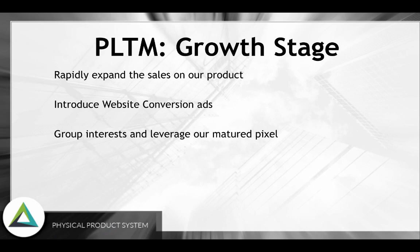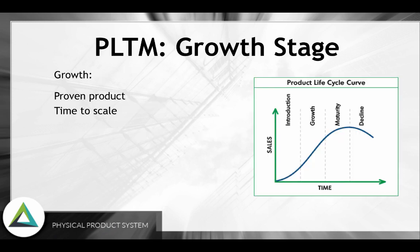We're going to get that out to as many people as possible before we risk being ripped off by competition. So we're introducing website conversion ads at this point, and we need to have that matured pixel. We're going to group our interests, split out on the demographic and platform side, and leverage our matured pixel. At this point we have a proven product — you may have gotten 50 to 100 sales off the click-to-website and PPE ads that matured the pixel and got you ready for website conversion ads.